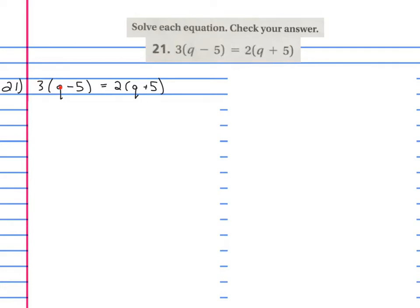Well, I need to distribute first. I need to say three times q and three times negative five, and here two times q, two times five. What do we get? We get 3q minus 15 equals 2q plus 10. And then hopefully you can just see this looks like one of the earlier problems that we did.